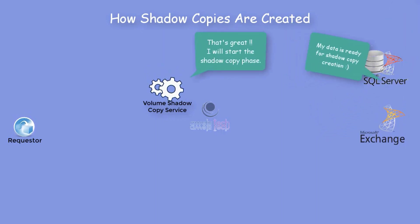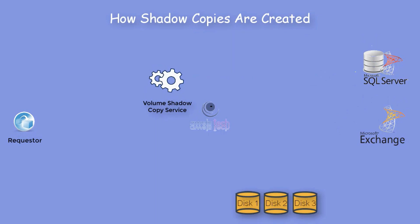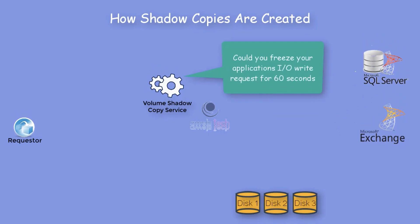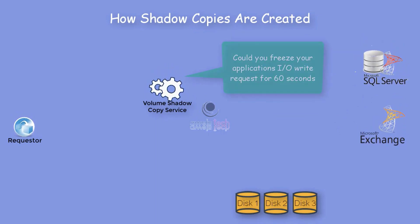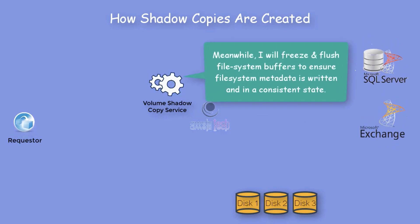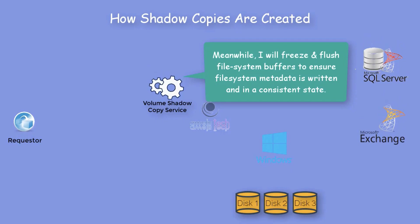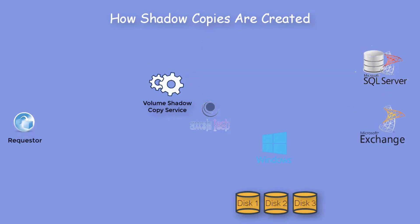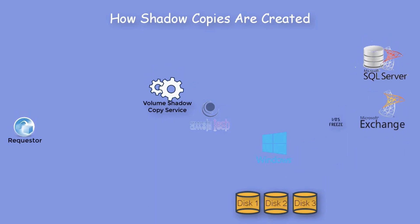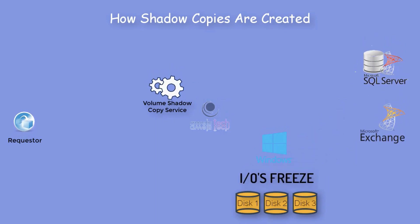VSS then starts the shadow copy phase. VSS tells the Writers to freeze the application's I/O writes for 60 seconds. Meanwhile, it freezes and flushes the file system buffers to ensure file system metadata is written and in a consistent state. The Writers then freeze the application's I/O for exactly 60 seconds.